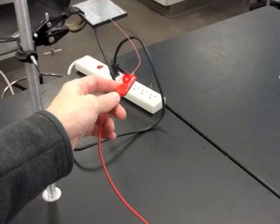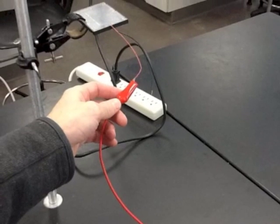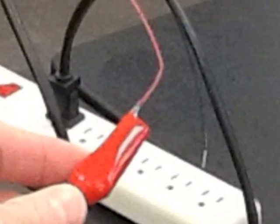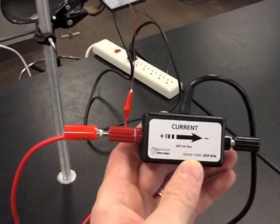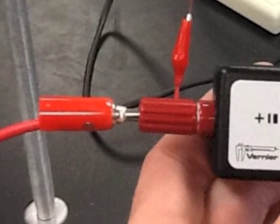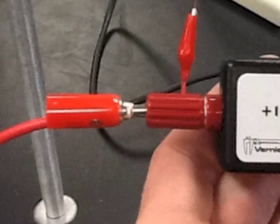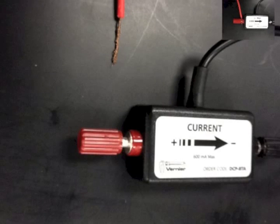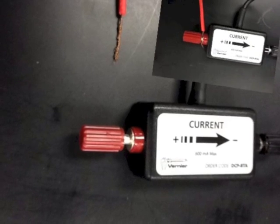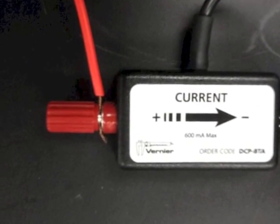Attach the alligator clip to the red wire coming out of the photovoltaic cell. And then attach the banana plug to the current meter. Alternatively, if you just have the bare wire, that will simply go right through this part of the current meter.